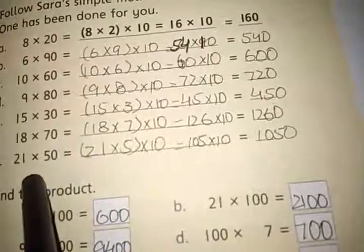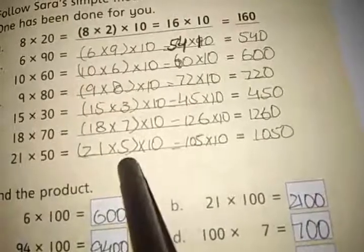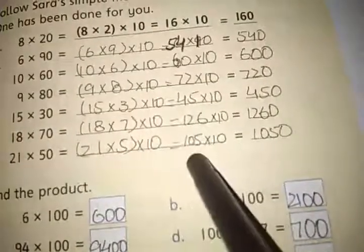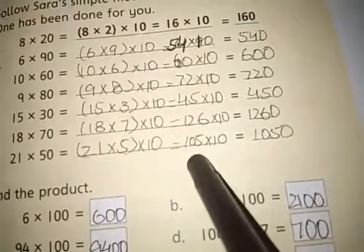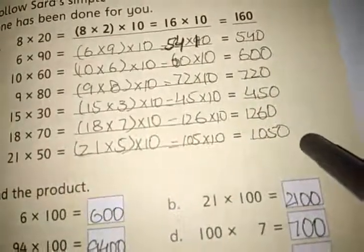The last question is 21 multiplied by 50. 21 multiplied by 5 is equal to 105. Then 105 multiplied by 10 is equal to 1050.